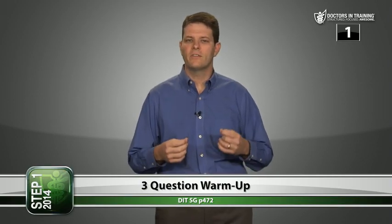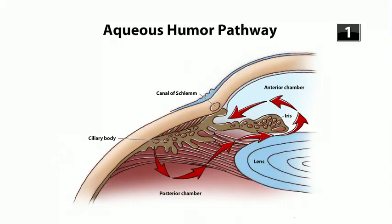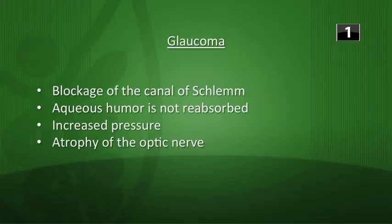Let's do the warm-up for Biochem 16. First question: what's the pathogenesis of glaucoma? Glaucoma occurs because there's obstruction that prevents reabsorption of the aqueous humor at the canal of Schlemm, which leads to increased pressure and eventually atrophy of the optic nerve.